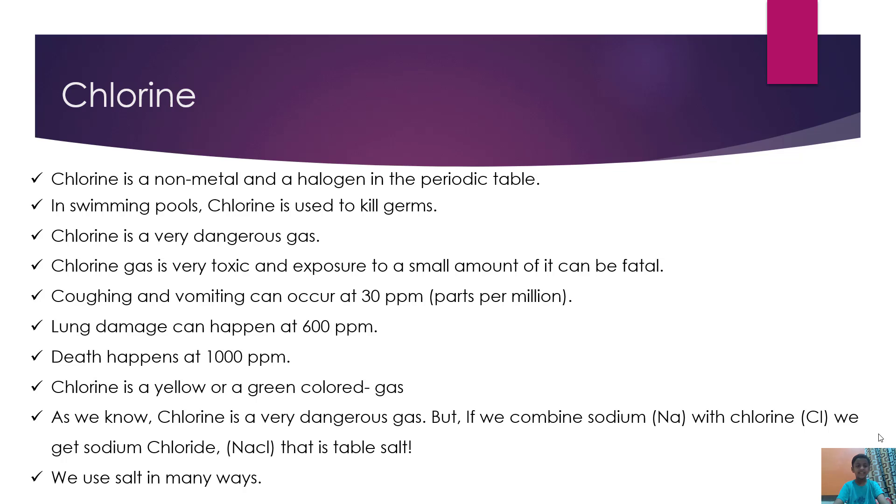Chlorine is a very dangerous gas. Chlorine gas is very toxic and exposure to a small amount of it can be fatal. Coughing and vomiting can occur at 30 ppm (parts per million). Lung damage can happen at 600 ppm. Death happens at 1000 ppm.